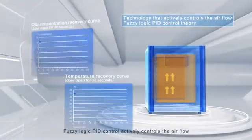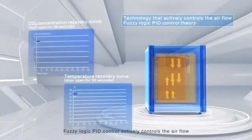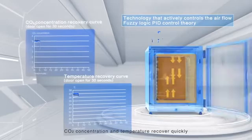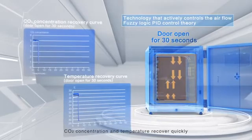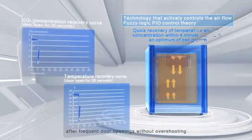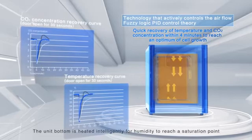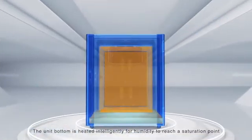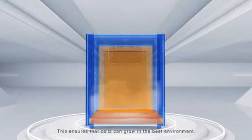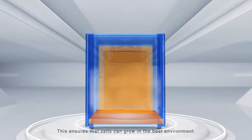Fuzzy Logic PID control actively controls the air flow. CO2 concentration and temperature recover quickly after frequent door openings without overshooting. The unit bottom is heated intelligently for humidity to reach a saturation point. This ensures that the cells can grow in the best environment.